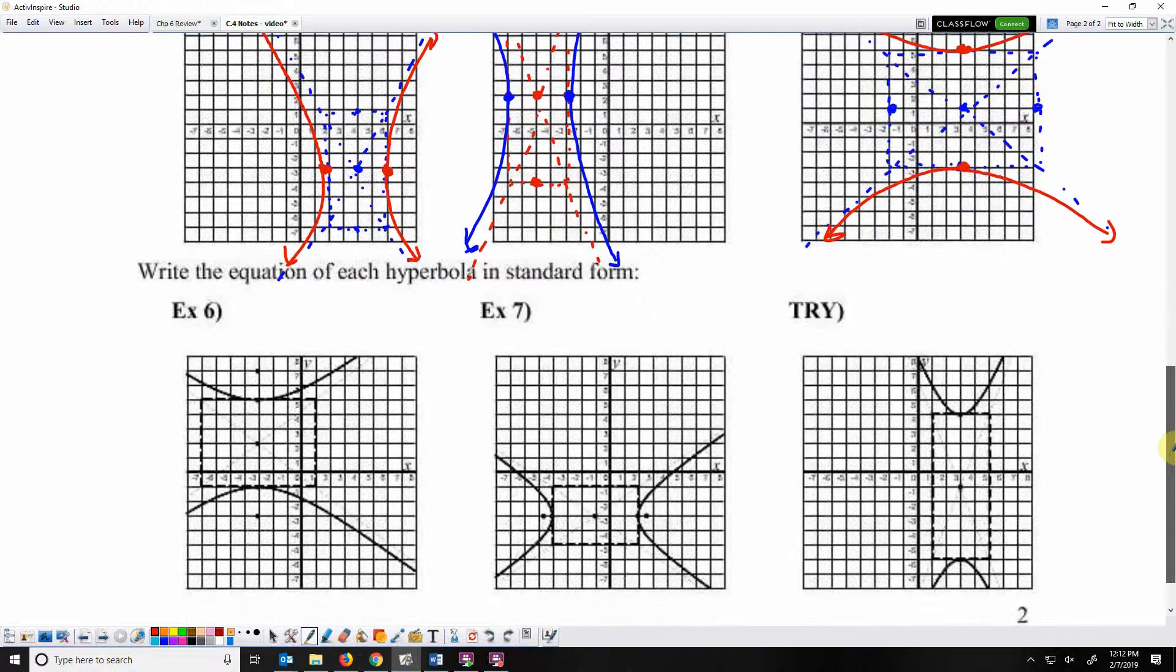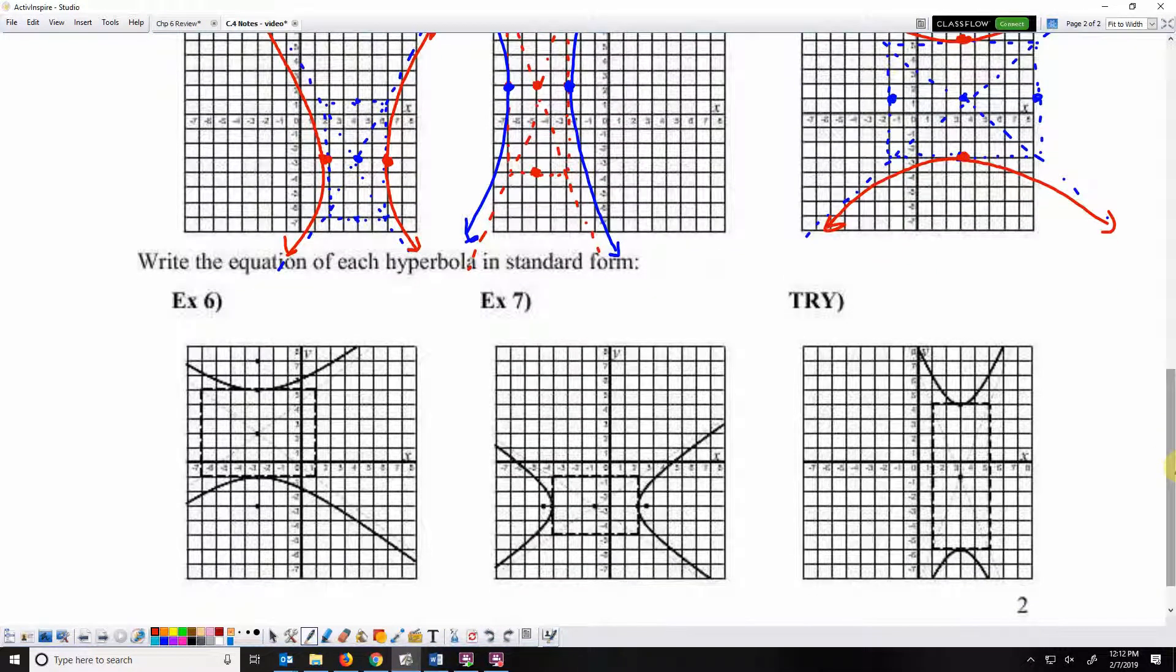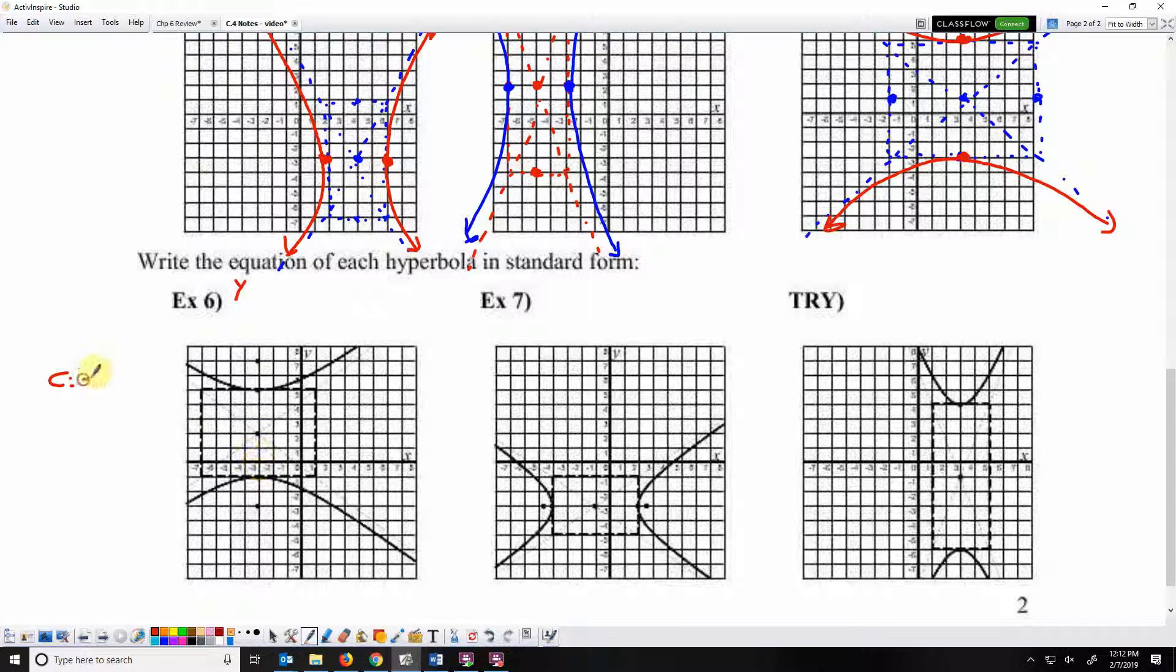Now we are going to write equations of hyperbola. This first hyperbola opens up and down. It is vertical, so Y will go first. The center of this hyperbola is at negative 3, positive 2. So I've got Y minus 2 squared over something, and then I've got X plus 3 squared over something equals 1.